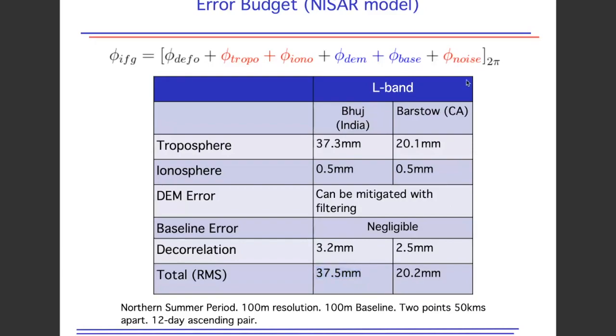Barstow is a fairly optimistic area — very arid, almost no vegetation — and even in that case you see about 2 centimeters of deformation error.